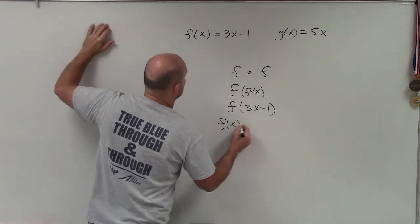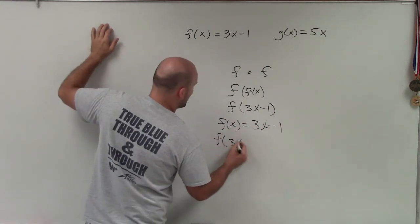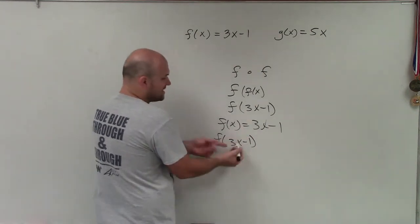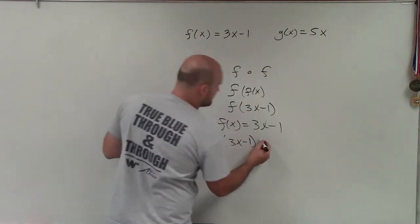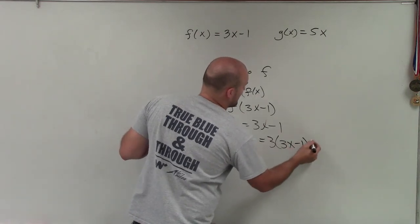So f of x, we know, is 3x minus 1. So f of 3x minus 1, now what I'm going to do is wherever I see an x, I'm going to rewrite it as 3x minus 1 equals 3 times 3x minus 1 minus 1.